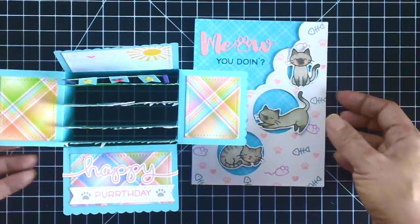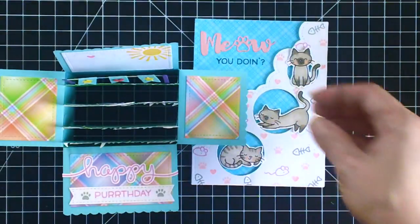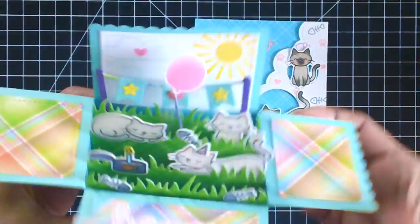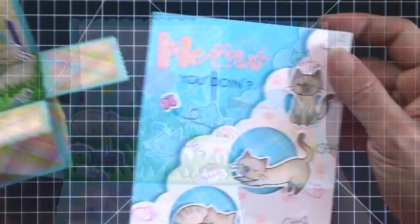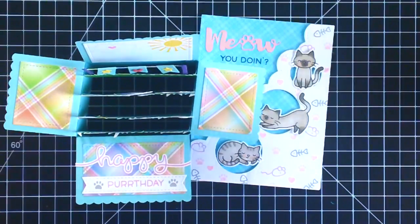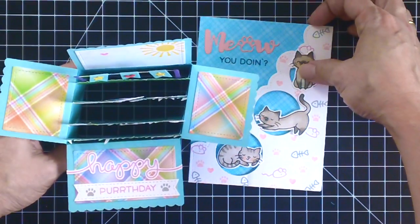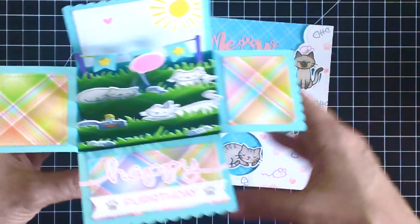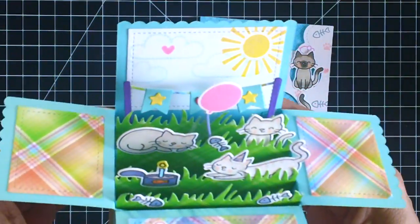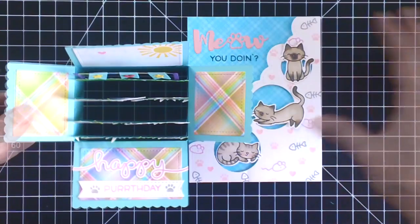So here are the two cards again showcasing the meow you doing stamp set by Lawn Fawn and the pop-up box card and this cute card right here. So thank you again for joining me. If you like the project please don't forget to give this video a thumbs up. Don't forget to visit my blog for a step-by-step instruction for this pop-up box card and I will see you on my next video. Bye for now, have an amazing day.